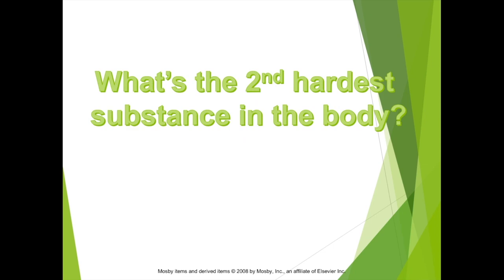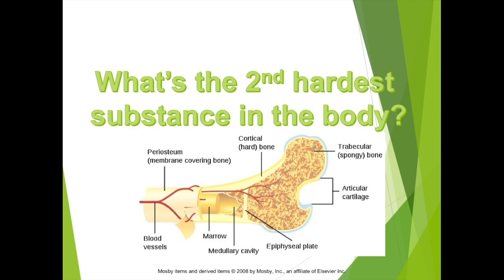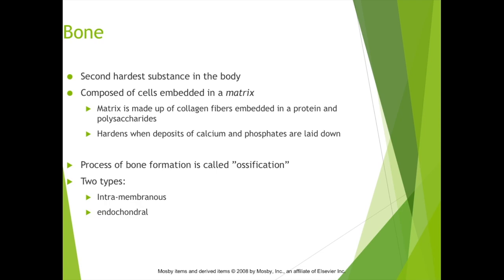What's the second hardest substance in the body? That of course is bone — most particularly the cortical or cancellous bone, which is the outer layer of bone. It is the second hardest substance in the body, and it's composed of cells embedded in a matrix. The matrix is composed of collagen fibers embedded in a protein and polysaccharides, and it hardens when deposits of calcium and phosphates are laid down. This laying-down process is called ossification.